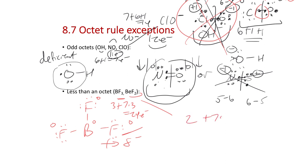BeF2 is another example: beryllium has only two valence electrons. With 2 + 2×7 = 16 total electrons, we have beryllium bonded to two fluorines with lone pairs on F. Beryllium has two electrons surrounding it, giving zero formal charge. Like boron, it's okay to be deficient of an octet for beryllium — it forms just two single bonds and not double bonds.